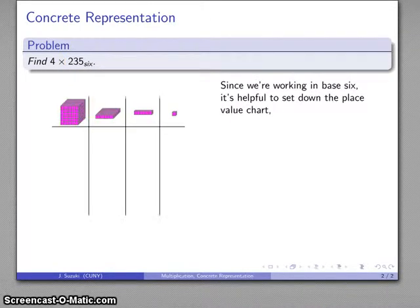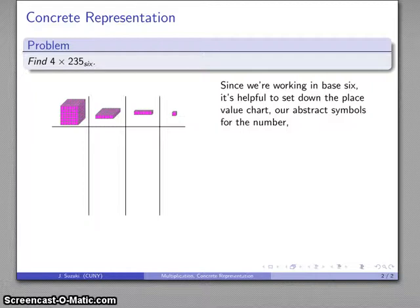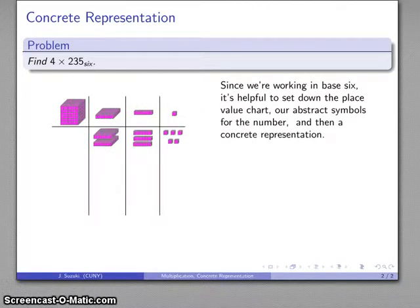Let's set down our place value chart. I don't actually need to draw out what each unit looks like, but it's a convenience. I have my number 235 base 6. That's 2 of these, 3 of these, 5 of these. Let's make a concrete representation of our number.